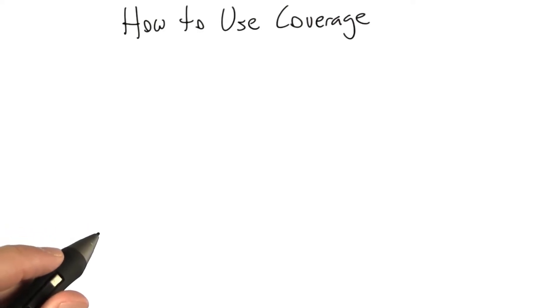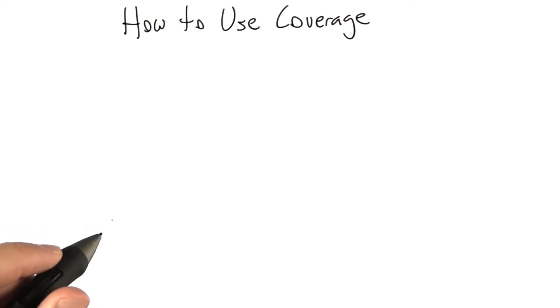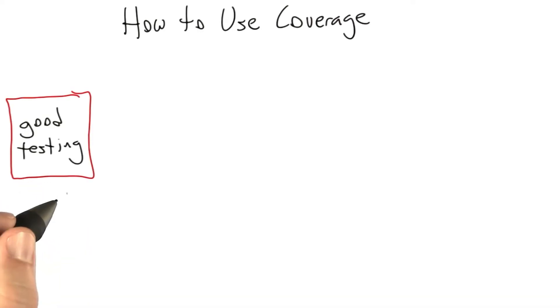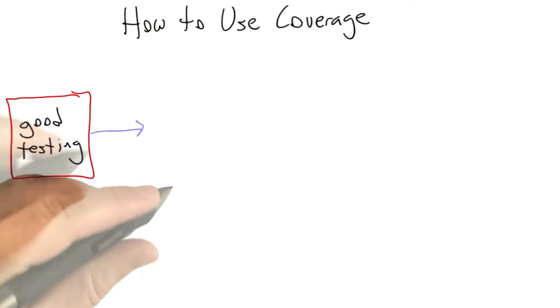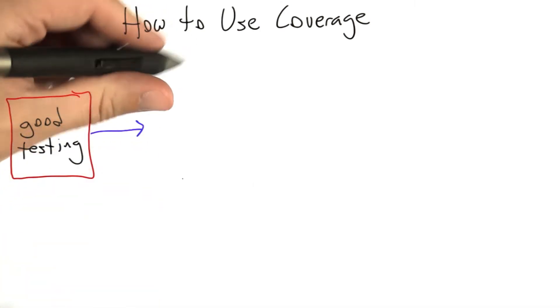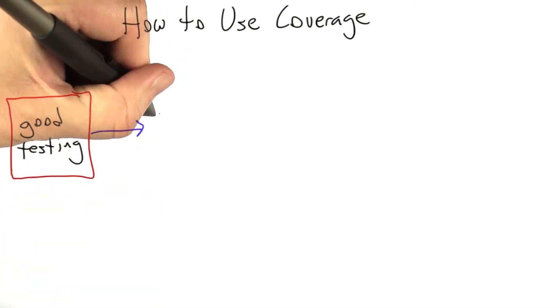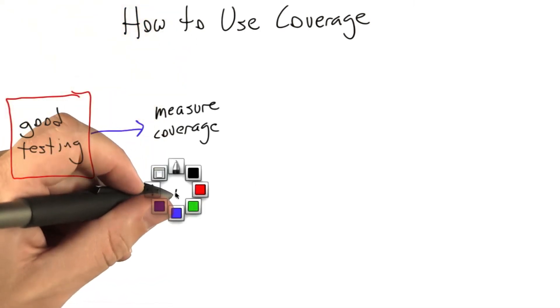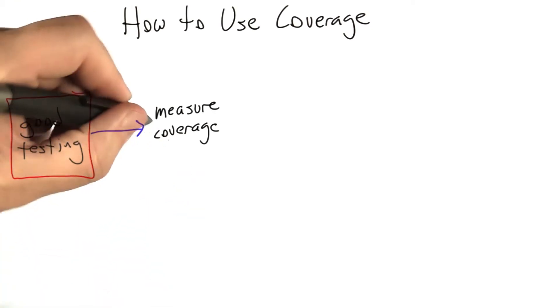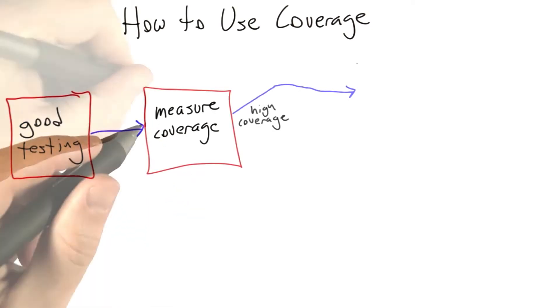I'm going to finish up this unit with a summary of how to use coverage to help us build better software. We're going to have to start off doing a good job testing, and there's no way around that. The next step is to measure the coverage of the tests, using some coverage metric that's appropriate for the software that you're testing.